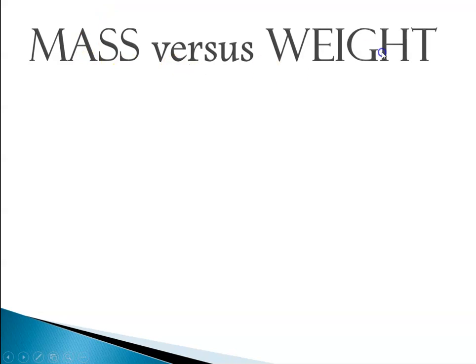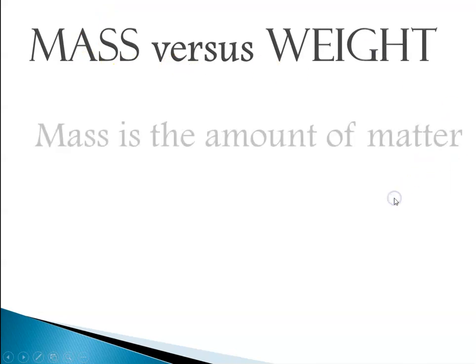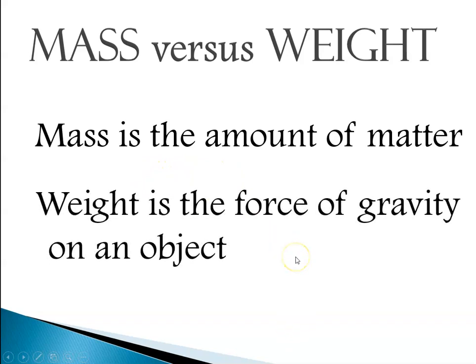So then we talk about mass versus weight. Mass is the amount of matter that something has, while weight is really a measure of the force of gravity on an object. This leads to a Ms. Augustine example.